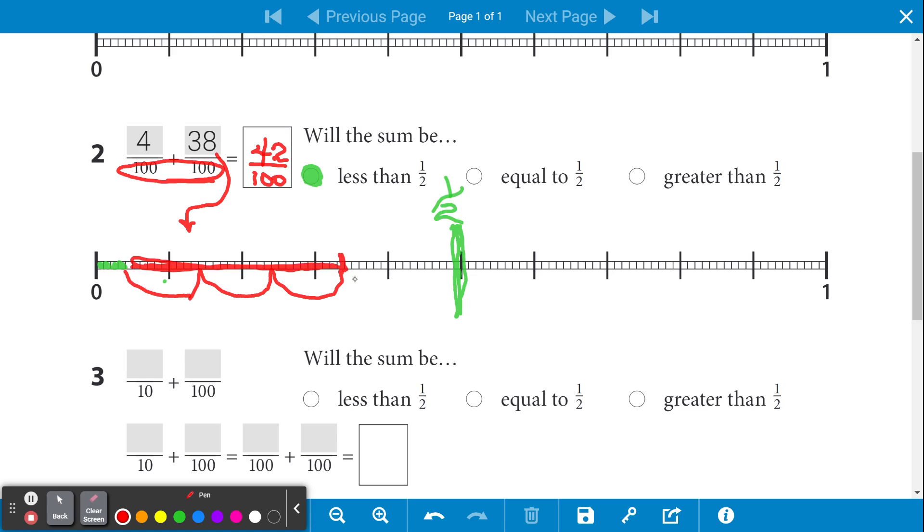And then I would need to count 8 more: 1, 2, 3, 4, 5, 6, 7, 8. And that also brings us to the 42 over 100.